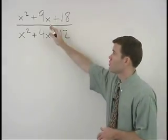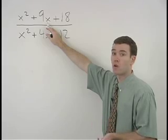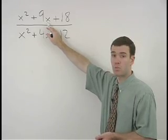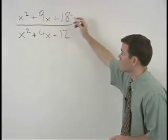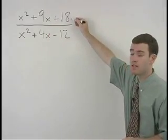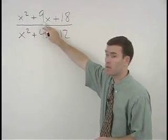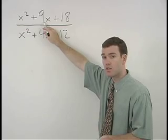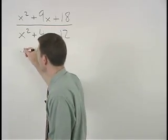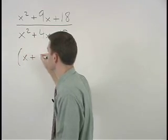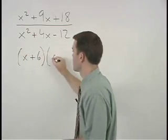So factoring the numerator in this problem, we have a trinomial that factors as the product of two binomials. We're looking for factors of positive 18 that add to positive 9, which are positive 6 and positive 3. So we have x plus 6 times x plus 3.